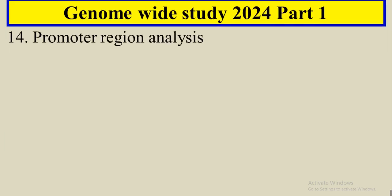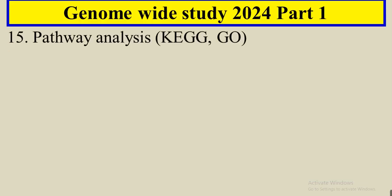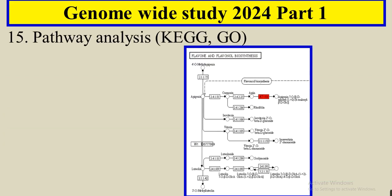Also find out the promoter region of our protein family and do the pathway analysis that our protein family is involved in which pathway through KEGG method or the gene ontology method.